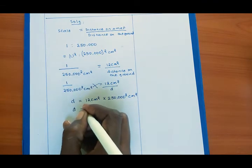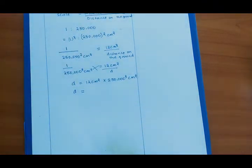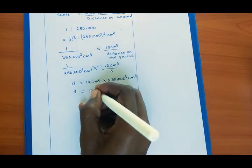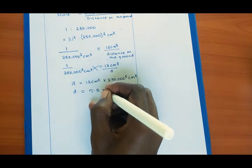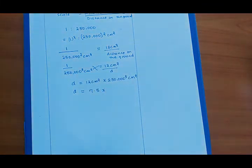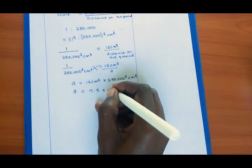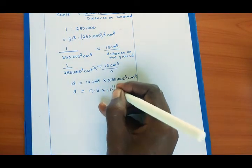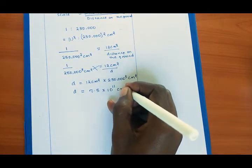So our distance will give us, when we square 12 centimeters and multiply by the square of 250,000, we shall get 7.5 times 10 to the power 11 in centimeters squared.